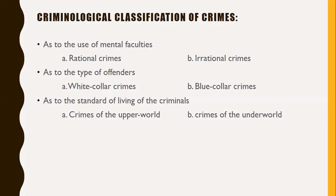As to the type of offender, white collar crimes are committed by persons with the aura of respectability from the upper socioeconomic class in the course of their occupational activities. Also referred to as corporate or occupational crimes, these include tax evasion, tax manipulation, plunder, bribery, corruption, bankruptcy fraud, fraud against the government, computer crimes, insurance fraud, and political fraud. Blue collar crimes are committed by ordinary professional criminals to maintain their livelihood.